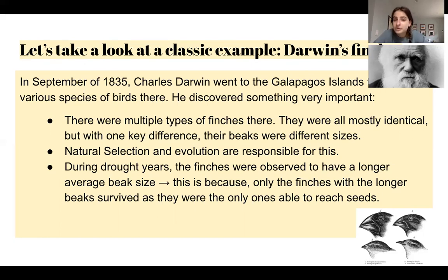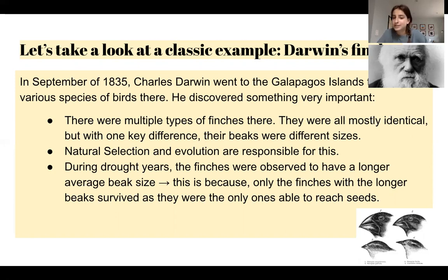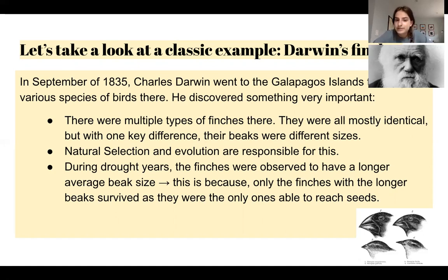Charles Darwin liked the Galapagos Islands and he did discover something very important there. He saw there were multiple types of finches — they were almost exactly identical but had a key difference: their beaks were different sizes, some longer and some shorter. Finches get their food source from trees, specifically little seeds buried in trees, but during drought years these plants and trees cannot produce the same amount of food and seeds for the finches.